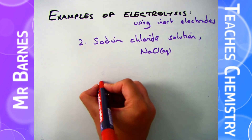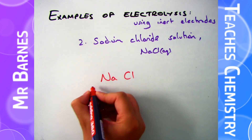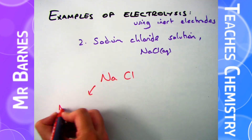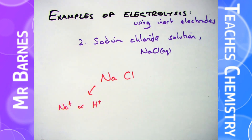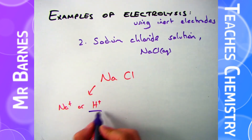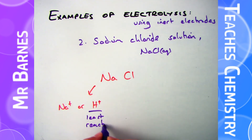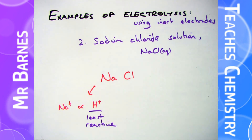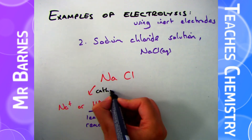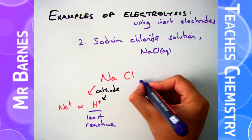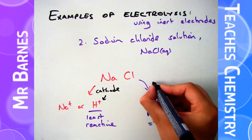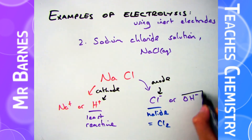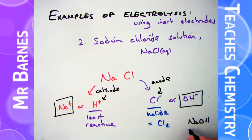Next example: sodium chloride NaCl - again it's aqueous, in solution - therefore I can either have Na+ or H+ produced at the cathode. The least reactive is hydrogen in this case because sodium is in group one, therefore I will have hydrogen H2 produced at the cathode. If we look at the anode, you're either going to have chlorine or OH-. The chloride ion is a halide therefore chlorine is going to be produced - we're going to get Cl2.